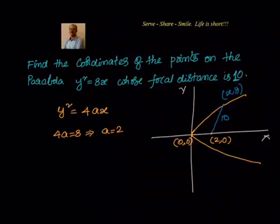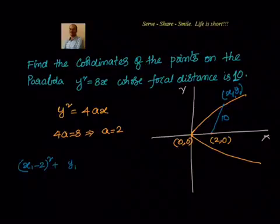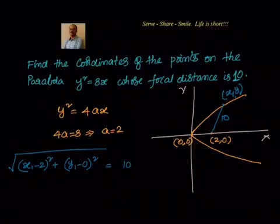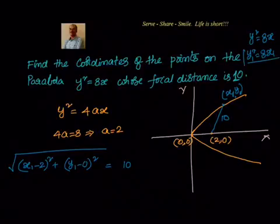We have two points: (x1, y1) on the parabola and the focus at (2, 0). The distance between them is √[(x1 − 2)² + (y1 − 0)²] = 10. Since (x1, y1) is also a point on the parabola, it satisfies y² = 8x, so y1² = 8x1.